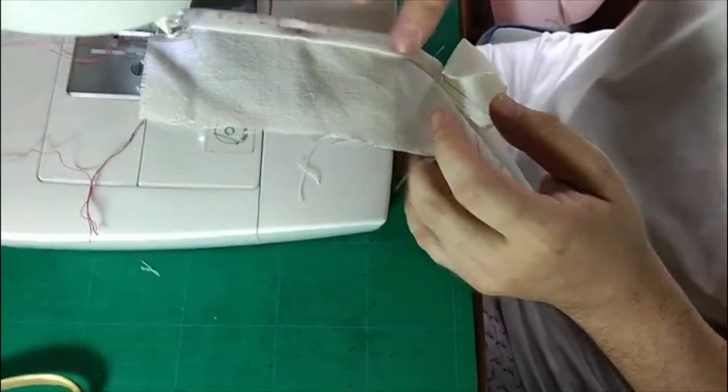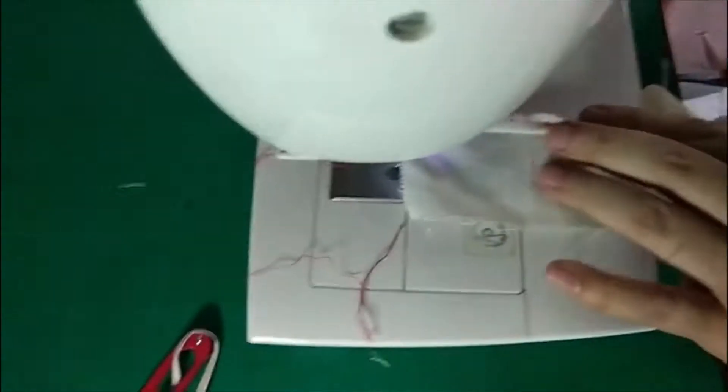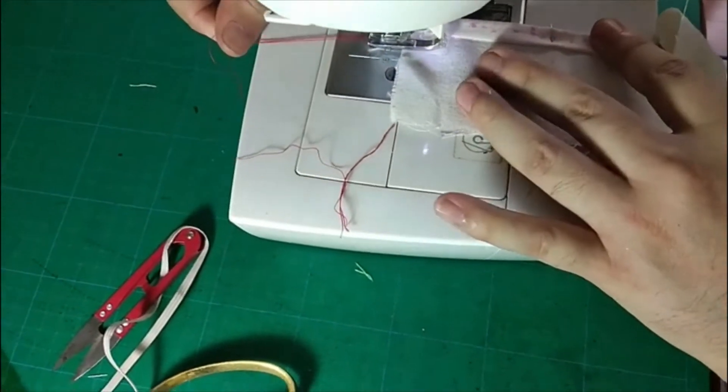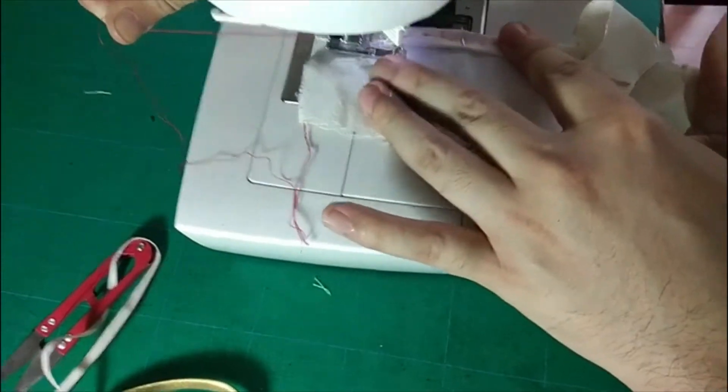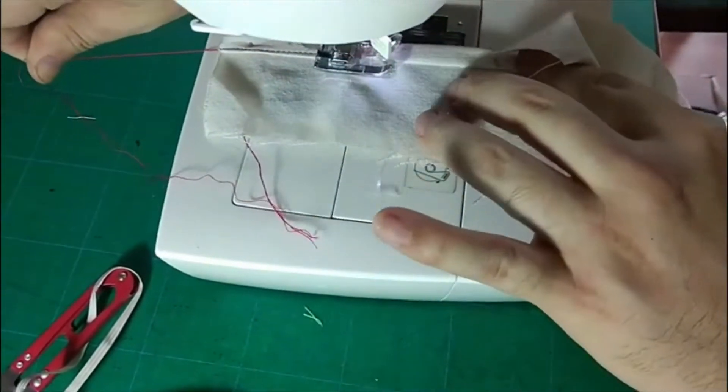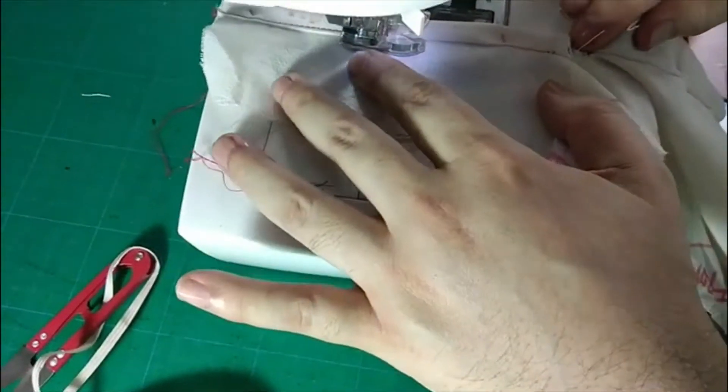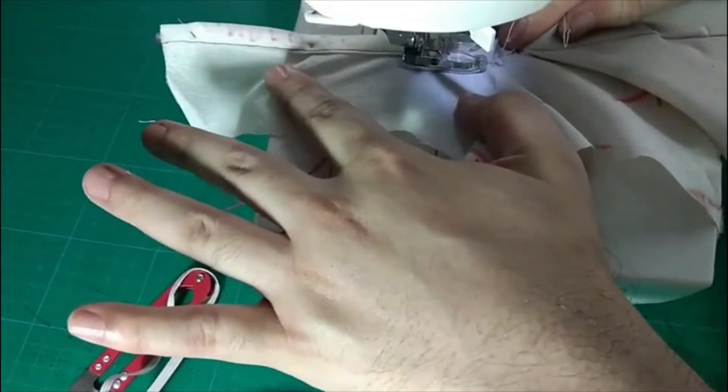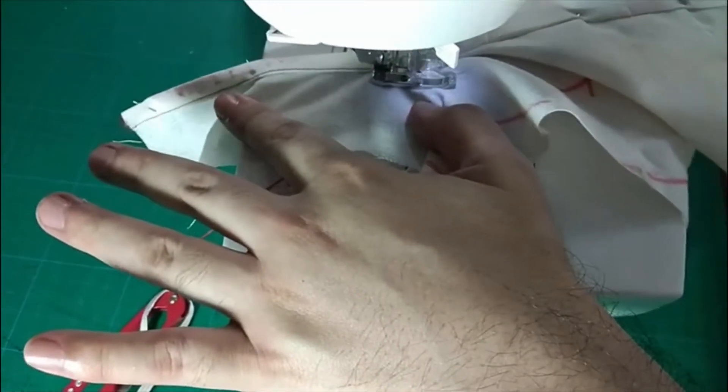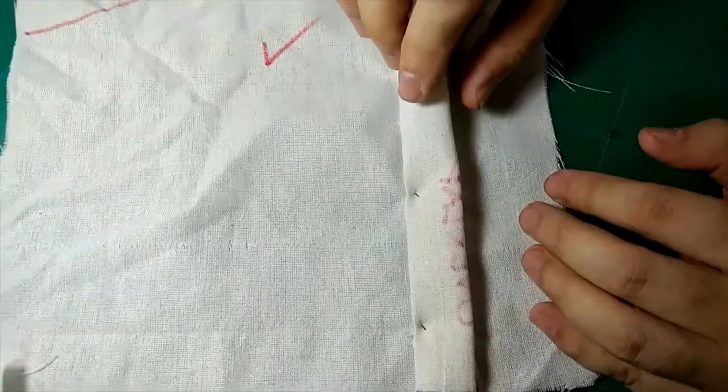Next we're going to edge stitch the underlap. This is the right side of the fabric. I turn it around and then we're going to stitch one-sixteenth away from the very edge. We're going to stitch at the very end of the corner.